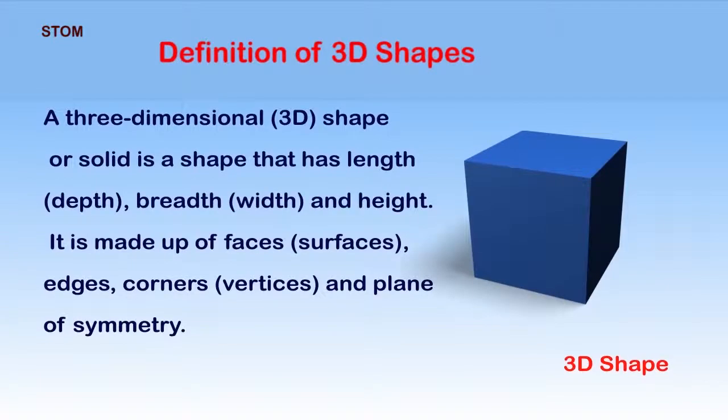Definition of 3D shapes: A three-dimensional shape or solid is a shape that has length, which is known as the depth, it has breadth, also known as the width, and it has a height.